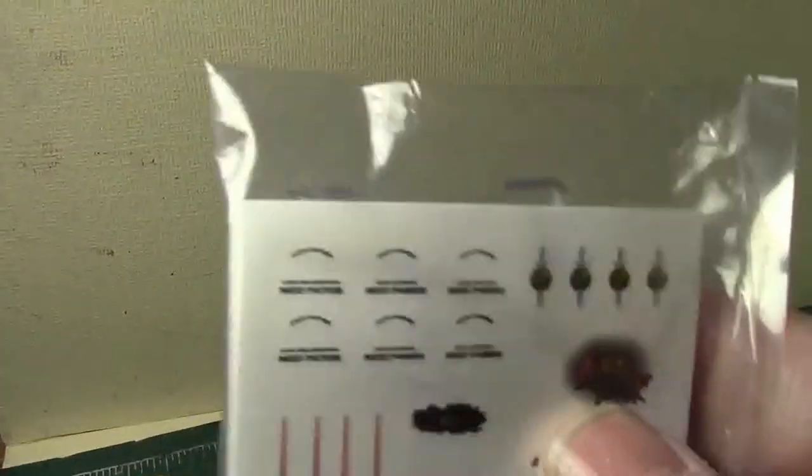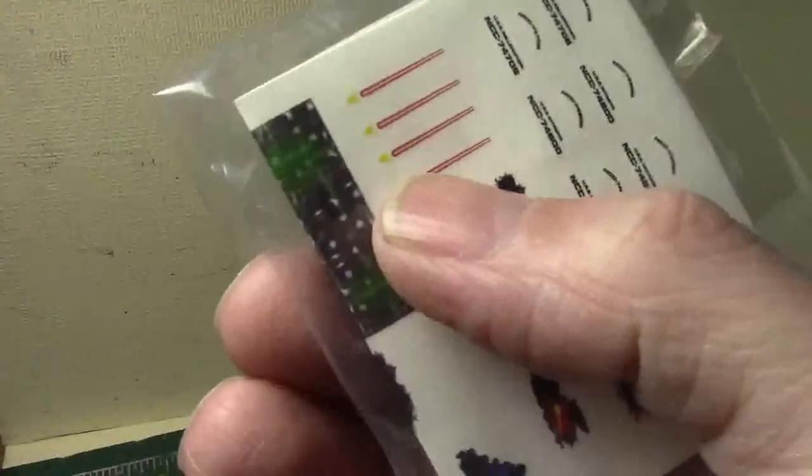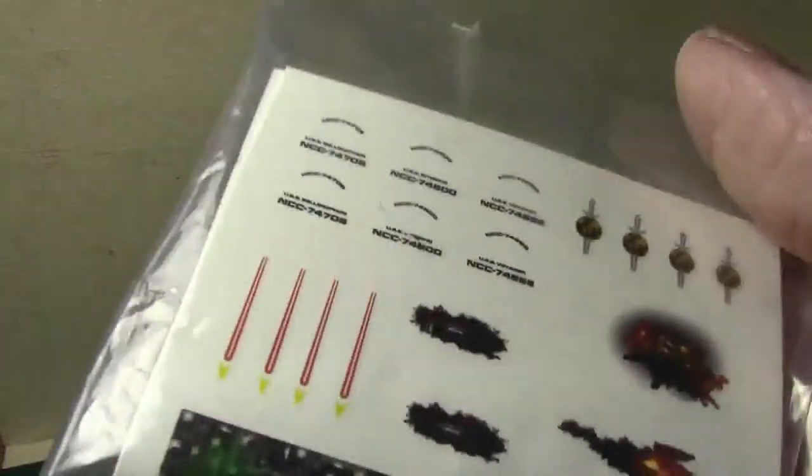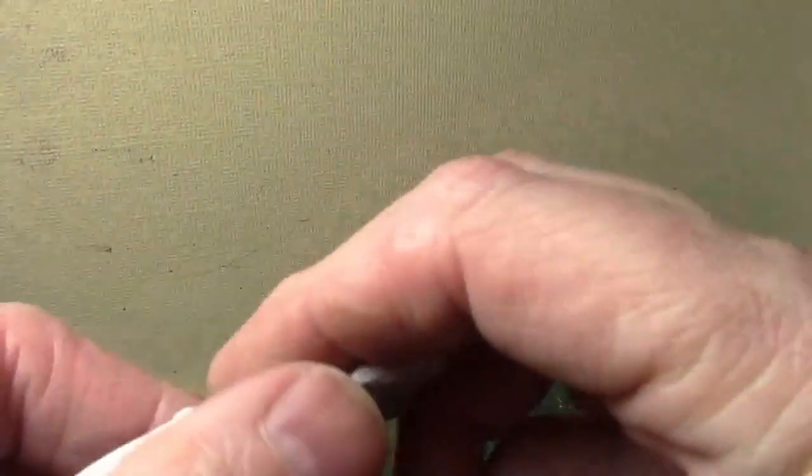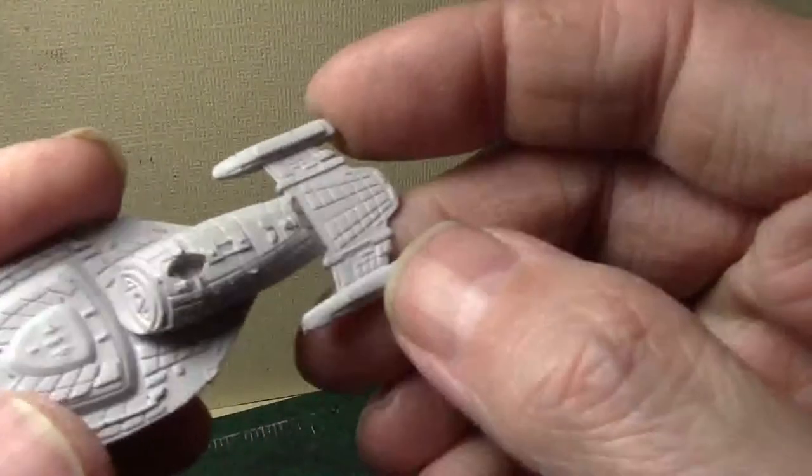It does come with some nice decals. It comes with three sets of numbers and names for the Bellerophon, which is one of the Intrepid class ships in the game, the Voyager, and the base ship USS Intrepid. It's got federation decals for the nacelles, alternative universe Terran Empire symbols, and Borg stuff. We're just going to use the Voyager. I'm not going to bother repriming it. I didn't take enough off to really bother. Everything else looks pretty good.